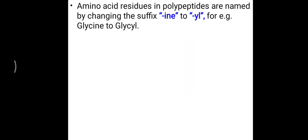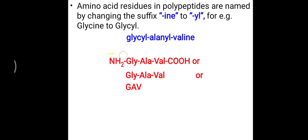Amino acid residues present in a polypeptide chain are generally called with the suffix '-yl' rather than '-ine'. So glycine becomes glycyl, and alanine becomes alanyl when present in the polypeptide chain. The N-terminal side serves as the first amino acid and the C-terminal side serves as the last amino acid of the polypeptide chain.